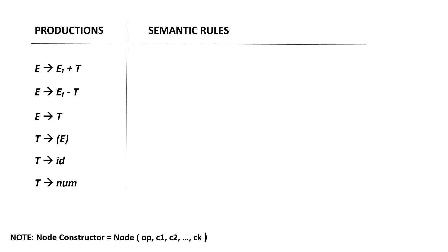Being that said, the e derives e1 plus t will be e dot node is equals to new node plus e sub 1 dot node and t dot node closing parenthesis.